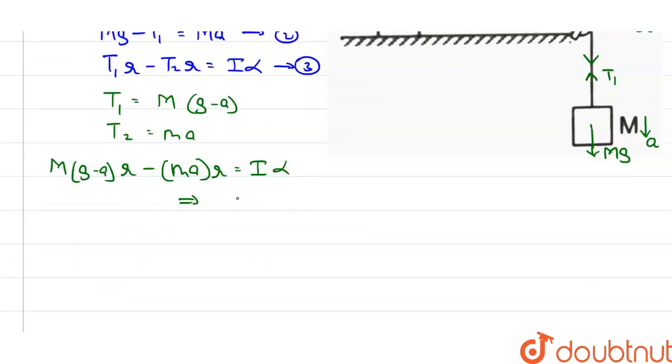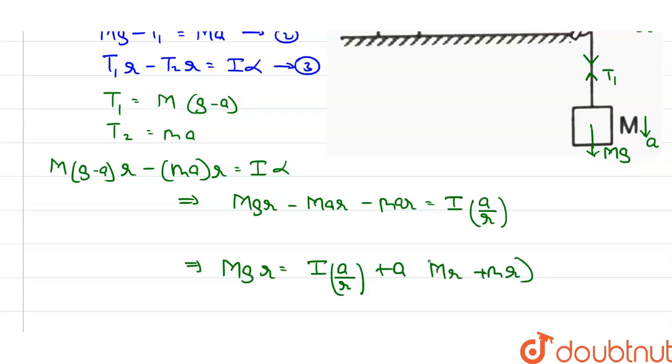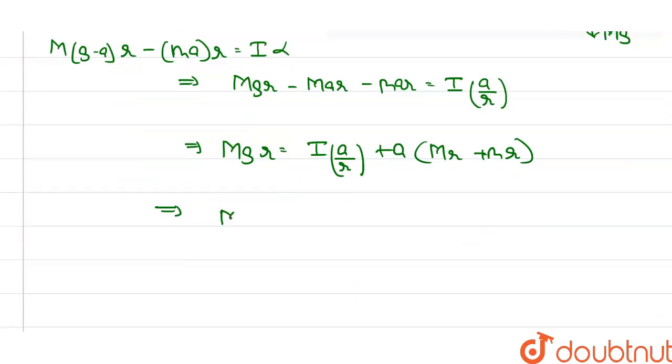This implies MgR minus MAR minus mAR is equal to I alpha, and alpha can be written as A by R. So we get MgR is equal to A into I upon R plus MR plus mR.